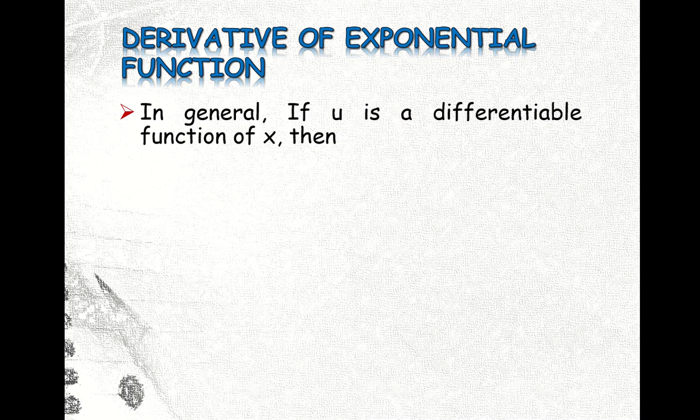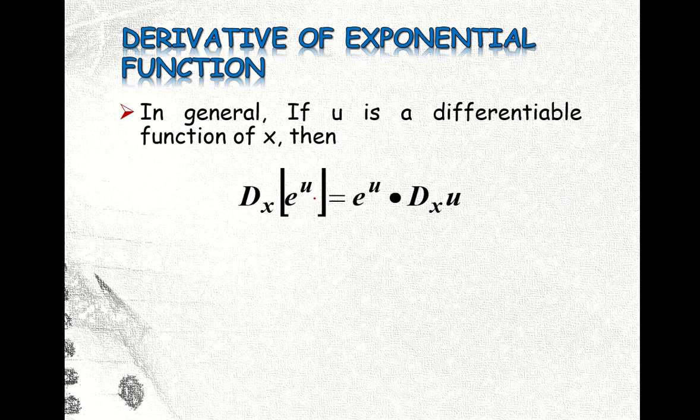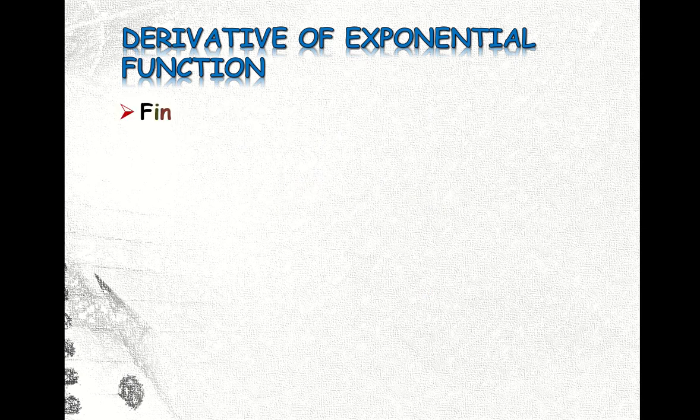So in general, if u is a differentiable function of x, then we have this formula of the derivative of exponential function. We have e to the u, so derivative of e to the u with respect to x is equal to e to the u times the derivative of u with respect to x.